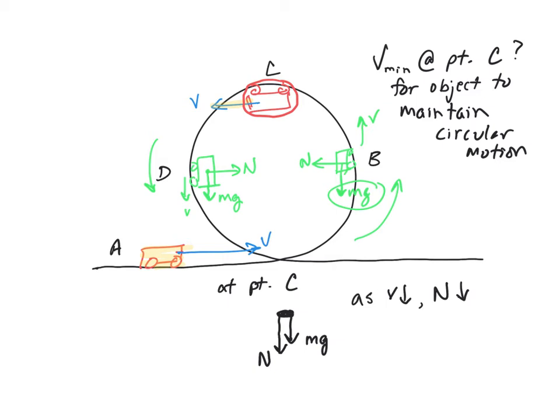And the minimum occurs at V minimum, the slowest speed. Just for an instant, the normal force goes to zero, just for an instant.